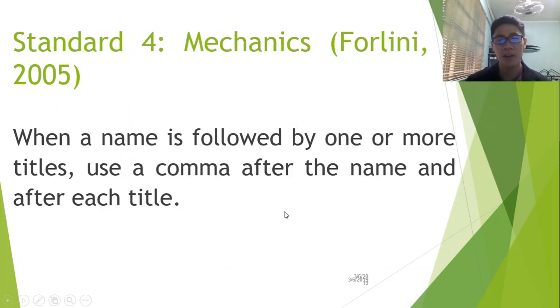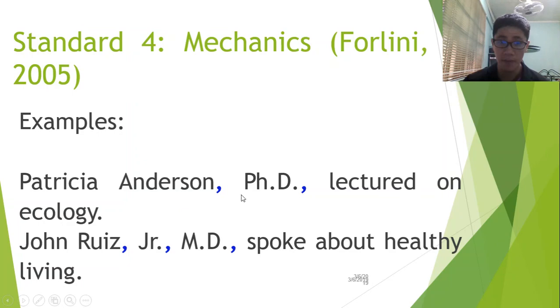When a name is followed by one or more titles, use a comma after the name and after each title. Now, this was given in the last segment on the use of abbreviations. Depending on the number of name extensions that the person has, that should also match the number of commas you're using. Like in this example, John Ruiz Jr. M.D. spoke about healthy living. Three names. Three commas. But in this case, it's only three because M.D. is written in the middle of the sentence, not the last.